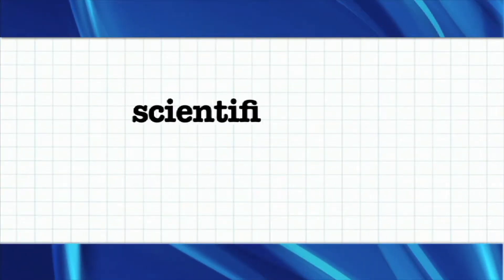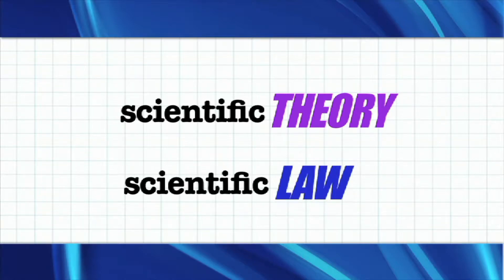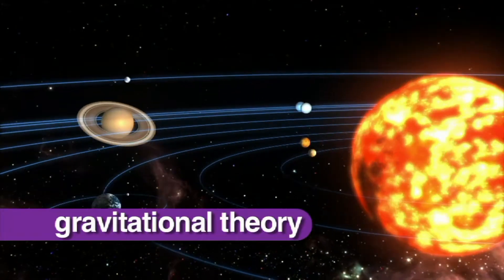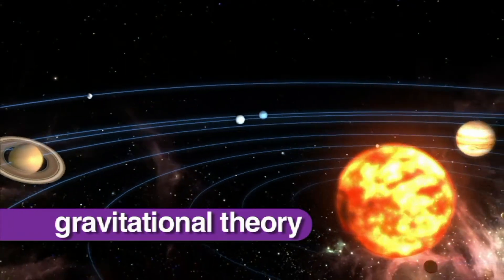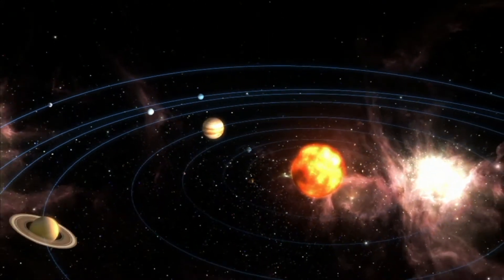Though related, scientific theory and scientific law are different. For example, gravitational theory is an explanation. The theory explains why two particles of matter attract one another.